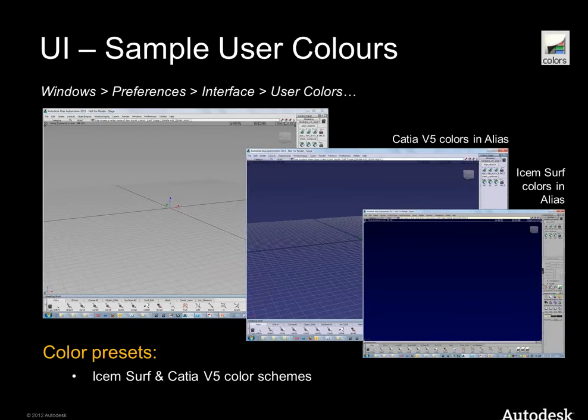We have also created a color scheme for different systems. In my trainings, some people coming from ISIM or Cartier asked for a dark blue background rather than the light gray of Alias — they are used to it. Now you can easily choose one of the color schemes found in the menu: Windows > Preferences > Interface > User Colors. It's ready to be used.